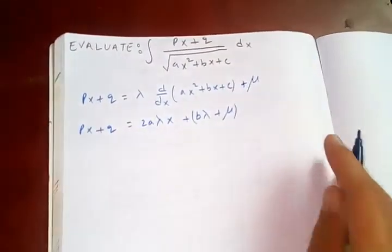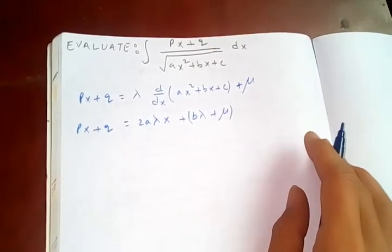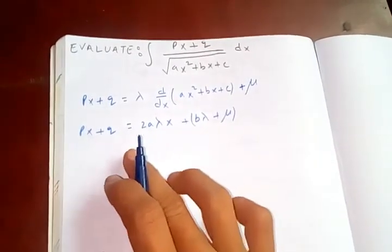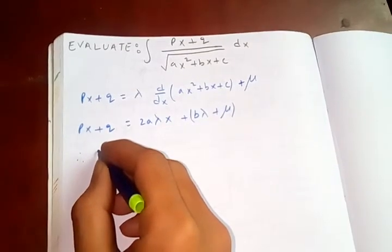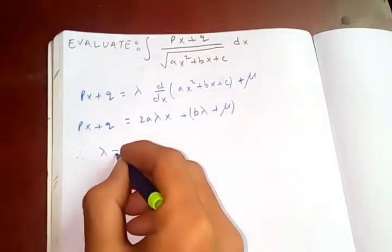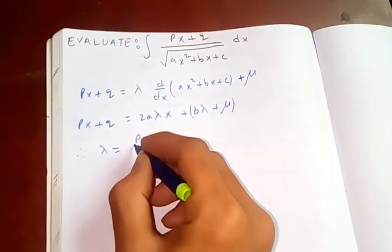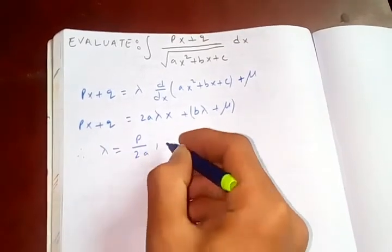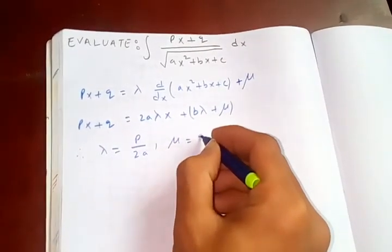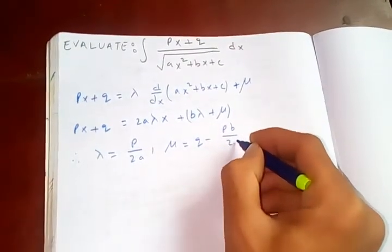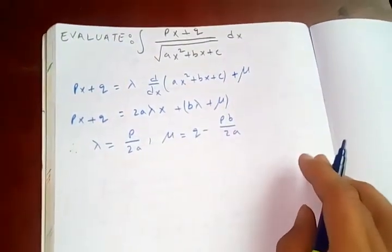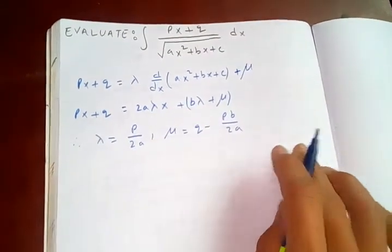Comparing these two, or comparing the coefficient of x and constant term, you will get lambda equal to p upon 2a, and mu equal to q minus pb upon 2a. It will come down like this.